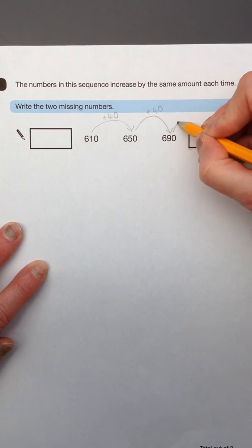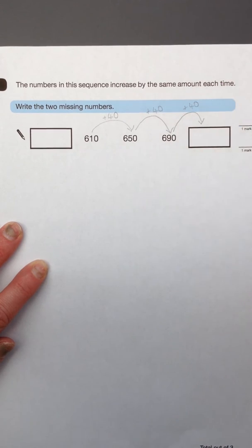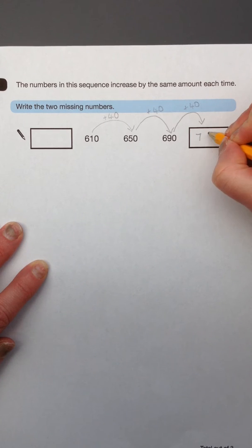So it's quite straightforward then to work out. You need to add 40 to get this missing number. So that will be 730.